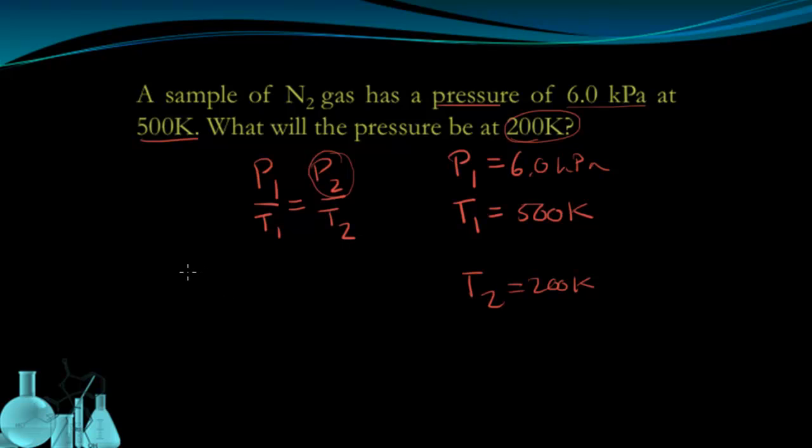Let's go ahead and plug in the values. 6.0 kPa is my P1, over T1, which is 500 Kelvin. That equals P2, which I'm interested in finding out, over 200 Kelvin, the final temperature.